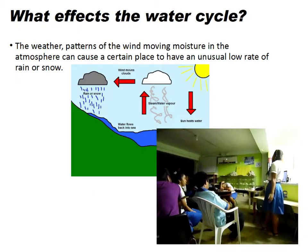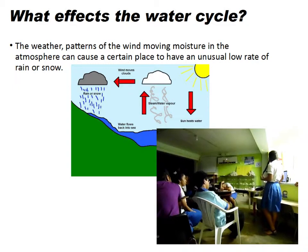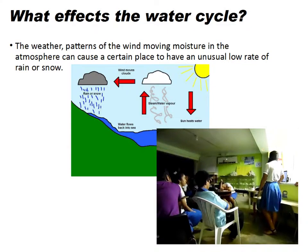What affects the water cycle? The weather. The patterns of the wind moving through the atmosphere can cause a certain place to have an unequal, low rate of rain or snow.